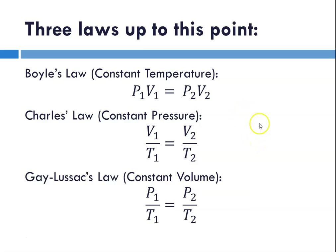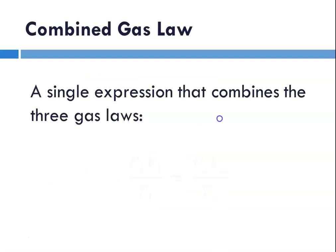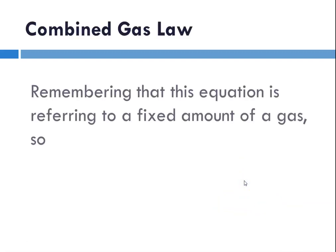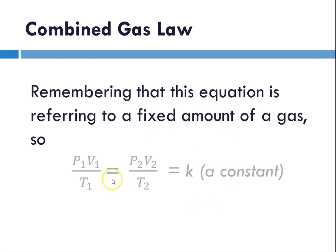So we can combine all three of those laws, remembering that they're all talking about a fixed quantity of a gas, so we're not changing the number of moles of the gas. And so we can combine all three of these equations into one single expression. And we write that as P1 V1 over T1 equals P2 V2 over T2. And again, remembering that this equation is referring to a fixed amount of a gas. So P1 V1 over T1 equals P2 V2 over T2, which is equal to a constant. And that constant contains two pieces. One is the number of moles, which we're going to learn is expressed with the variable n. And the other part of it is a gas constant, which is going to be referred to as r.